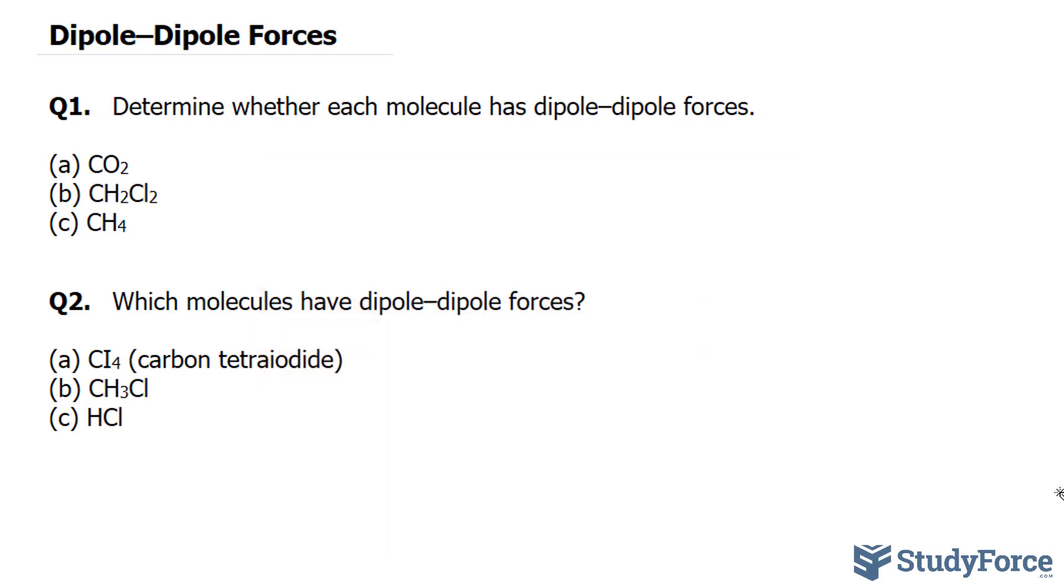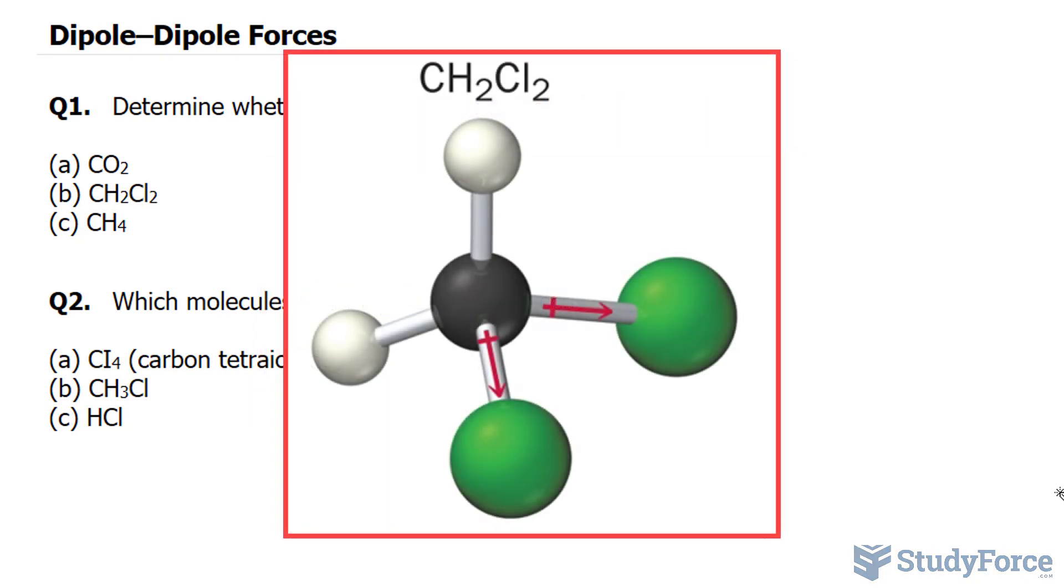Let's move on to the next molecule, CH2Cl2. On your screen, you can see a visual of this molecule. And let's begin by analyzing the electronegativity of the central atom carbon. It's 2.5.